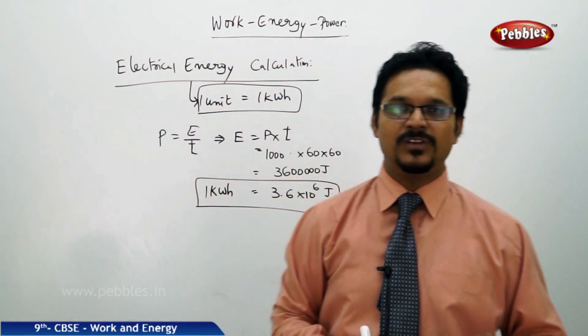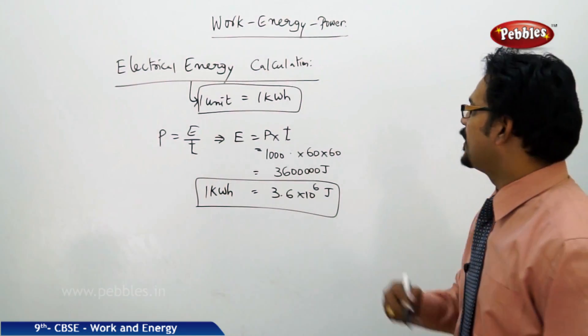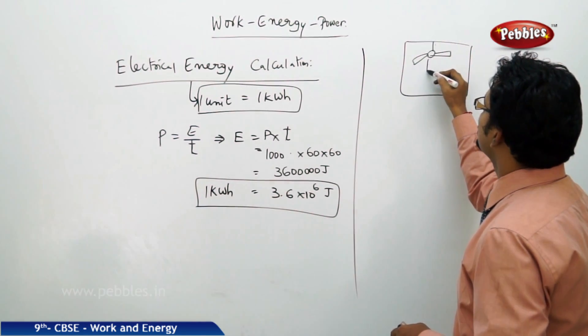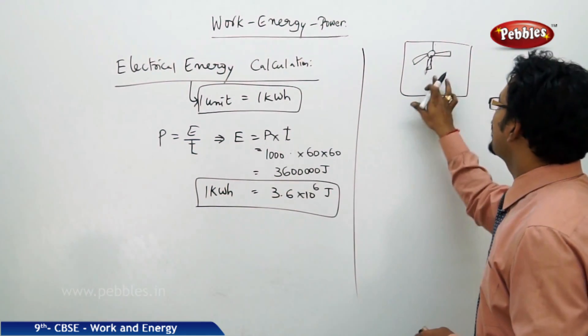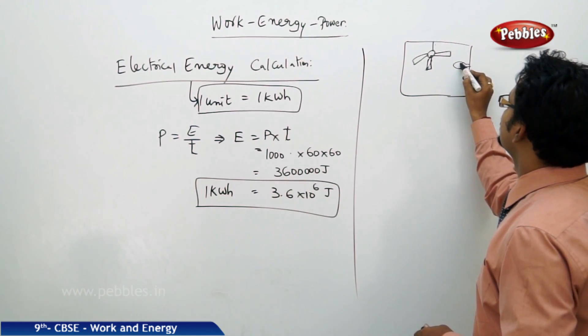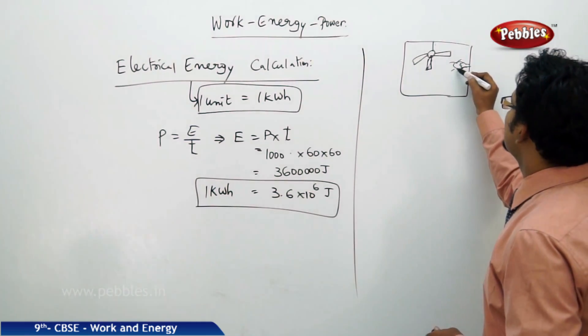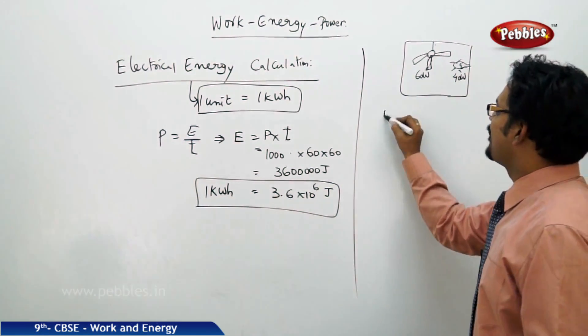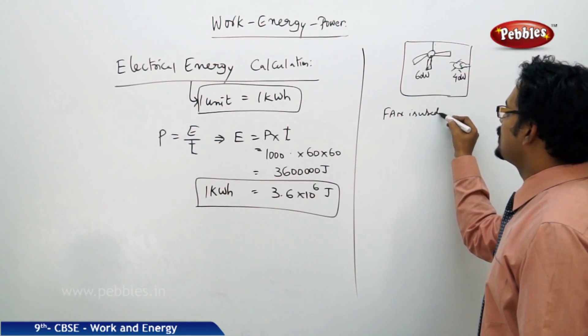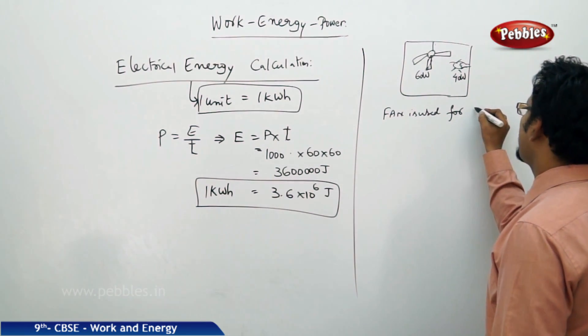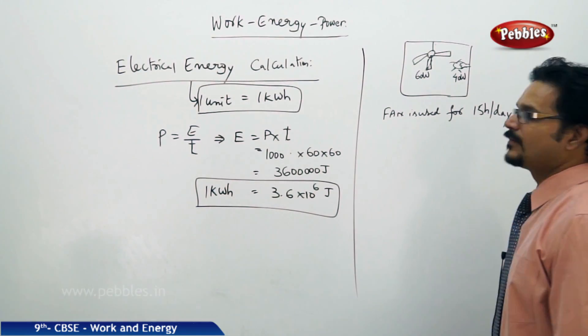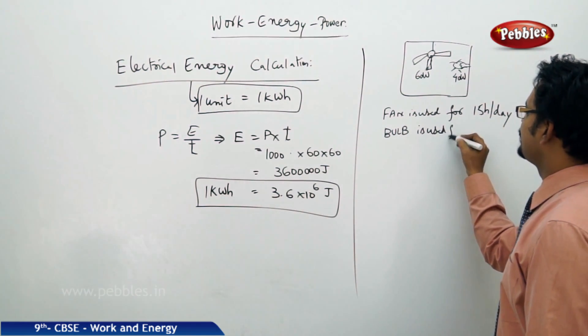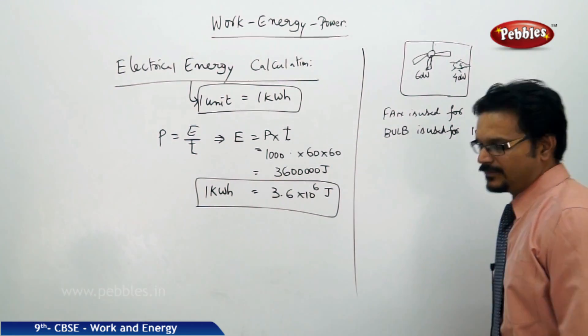Now how do we calculate if we use the bulb for 10 hours, if we use the fan for 8 hours, let me tell you. So there is a house. In that house you have a fan and there is a bulb. Let us say fan has 60 watts power, bulb has 40 watts power. Fan is used for 15 hours per day and bulb is used for 10 hours per day. This is example.